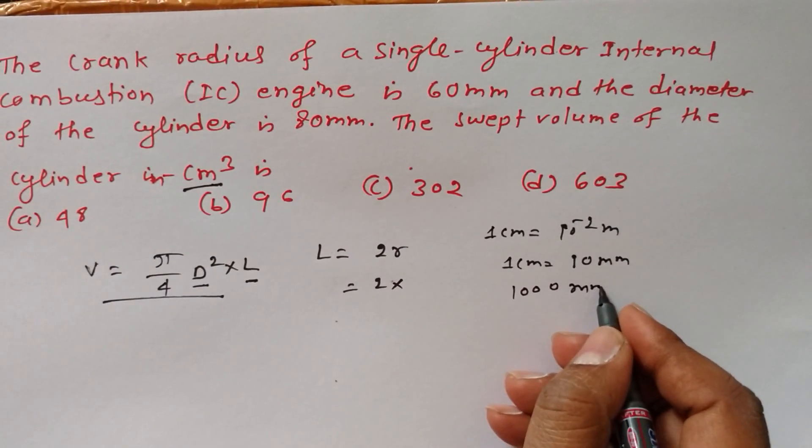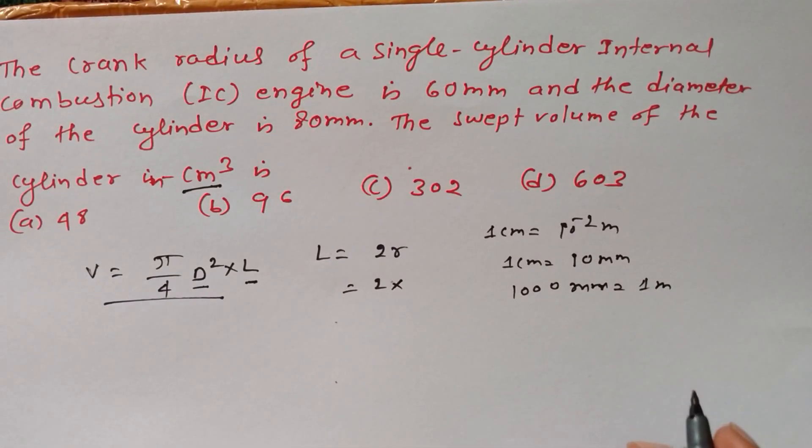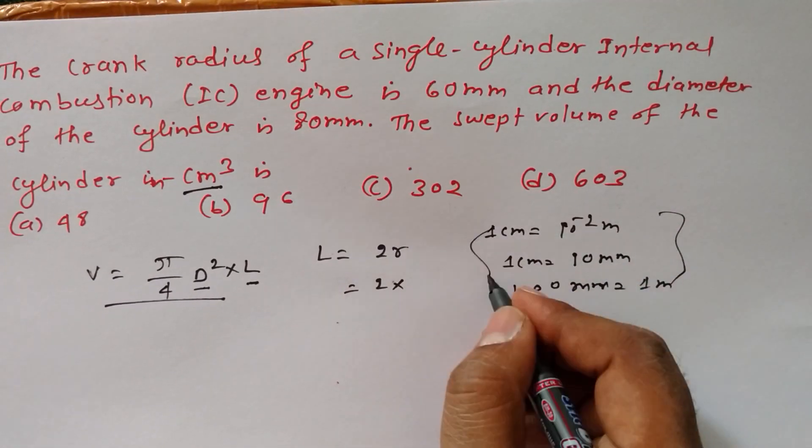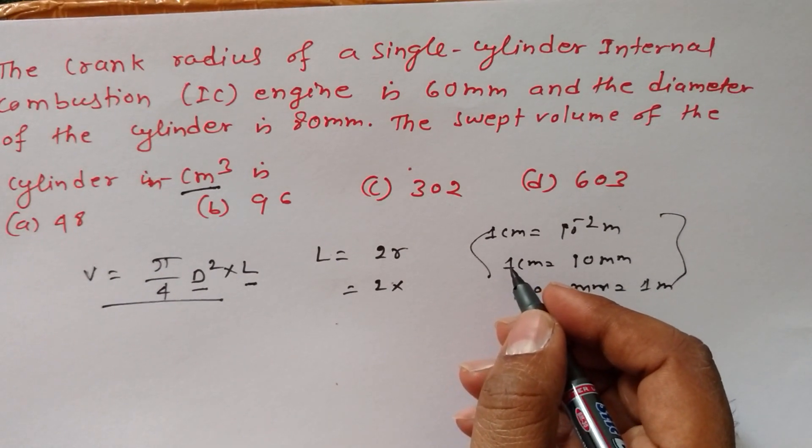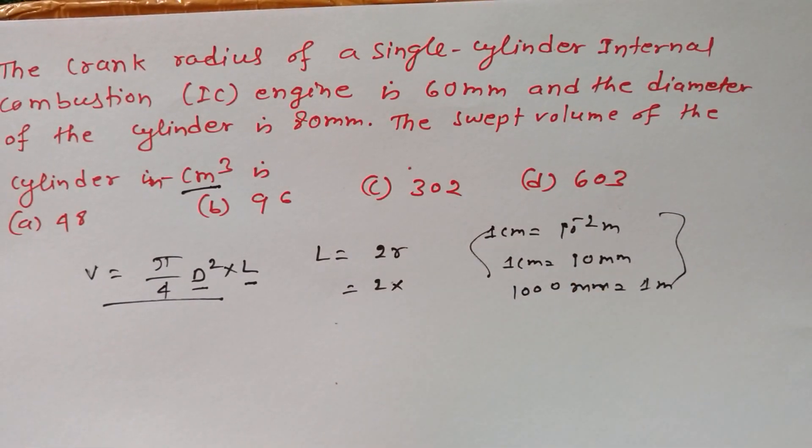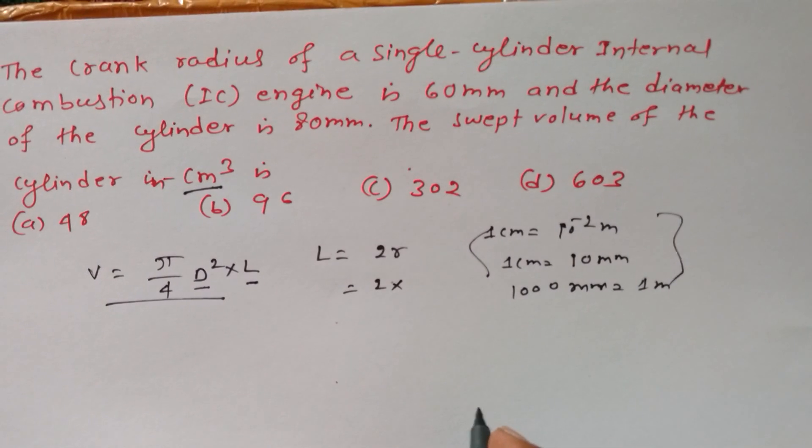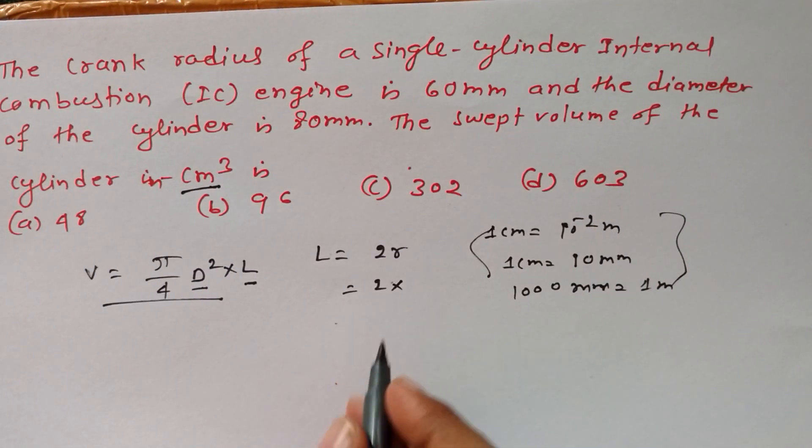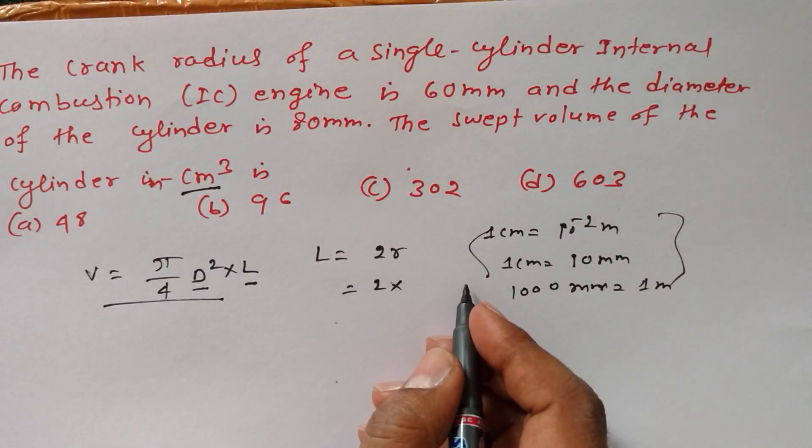So this is how you can check it, or you can check unit, because unit plays most important. You need to understand that, my dear. Okay, now so 2 into 60, that means 60mm means 6 centimeter.